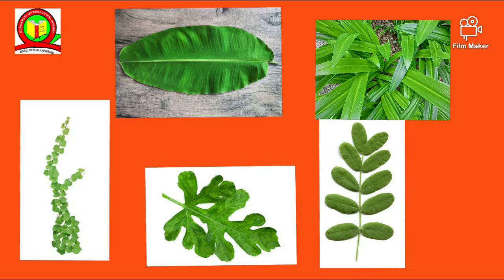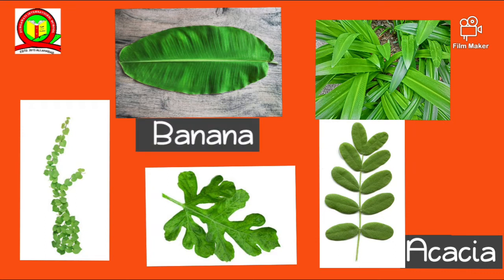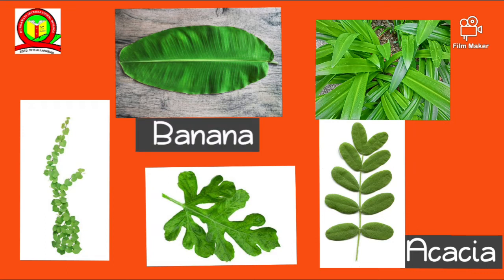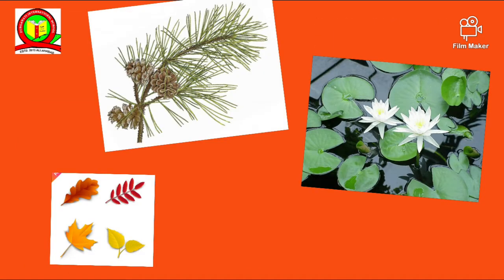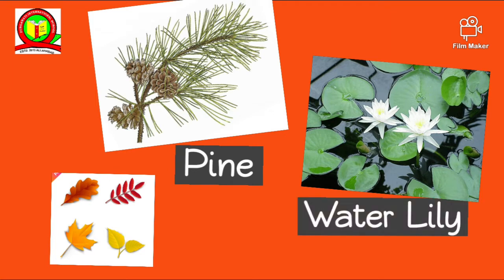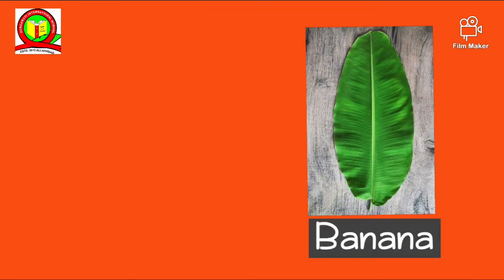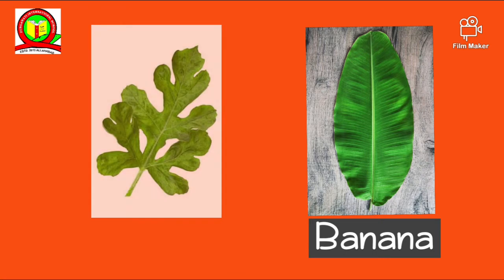If you look around, you would find many kinds of leaves. Some leaves are small, e.g. the acacia leaves, and some leaves are big, e.g. a banana leaf. Not just the size, even the shapes are different, like the needle-like shape in the pine, circular shape in the water lily, etc. Some leaves have smooth edges like the banana, and others such as in the oak have jagged edges.